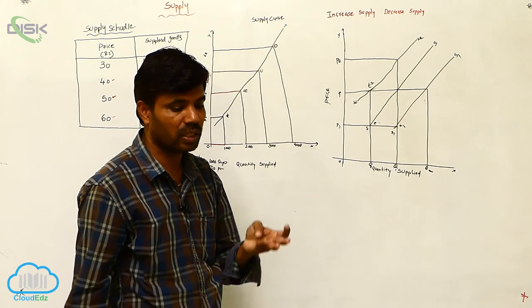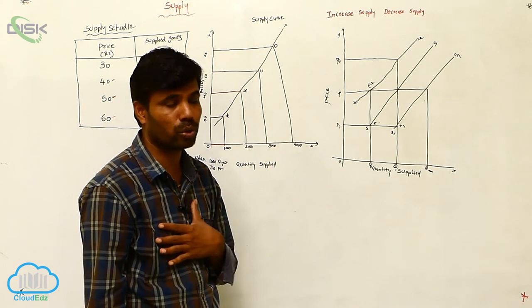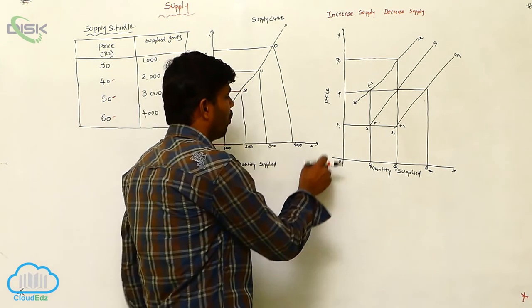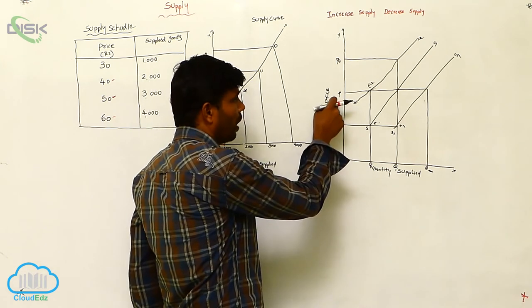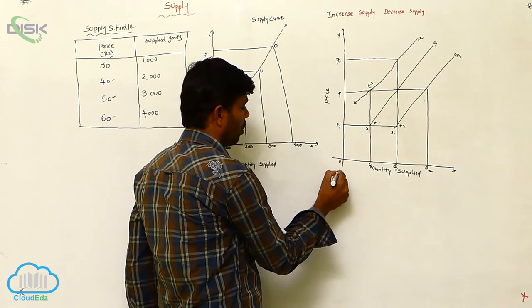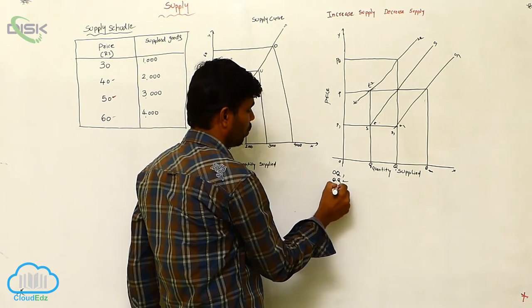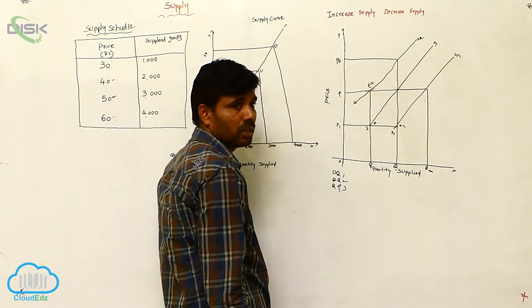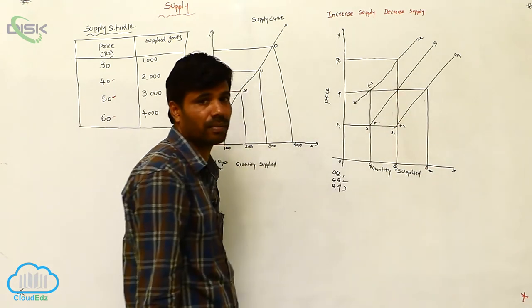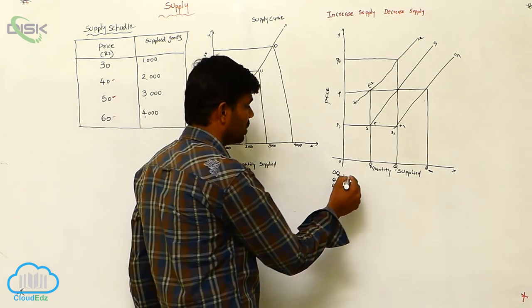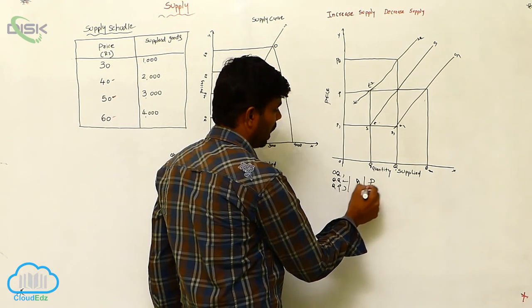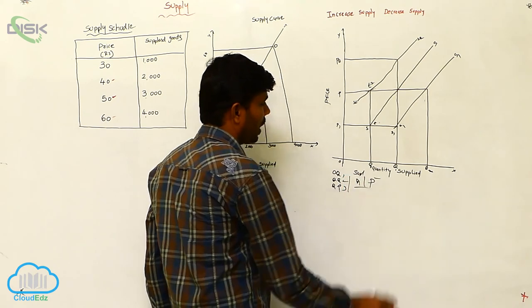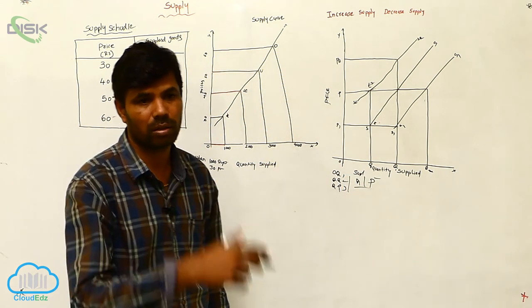When price is P2, then here also Q2 is the same. So simultaneously what I am saying is that in the situation of quantity OQ2, in situation of quantity OQ1, in situation of OQ, and OP2, OQ1, OQ2, OQ3 - sometimes is decreasing, sometimes is increasing. The total credit goes to the quantity and price. I mean to say supplied goods and the price are playing the role in this situation.